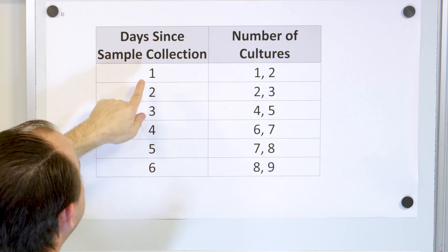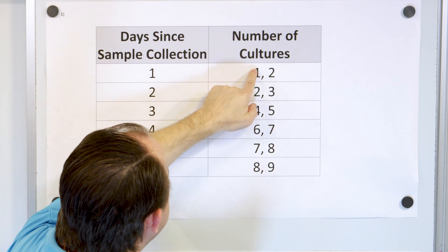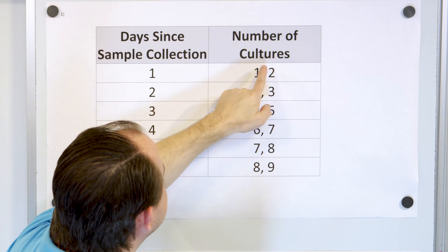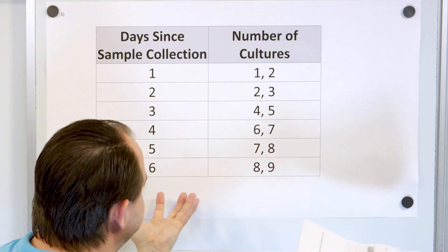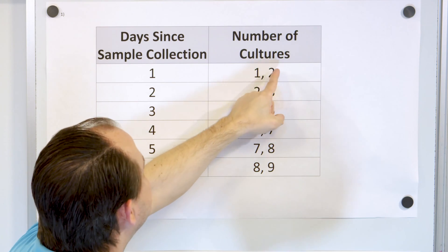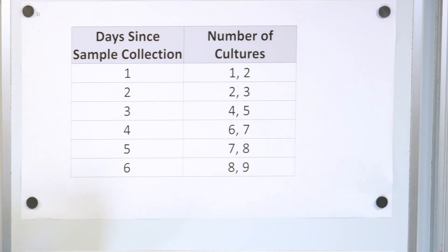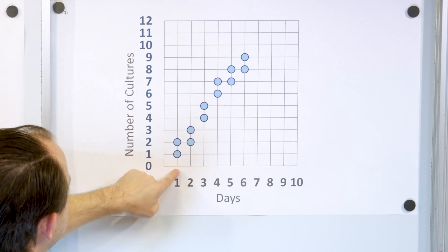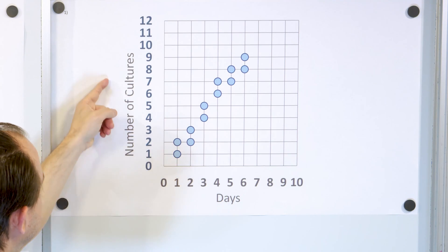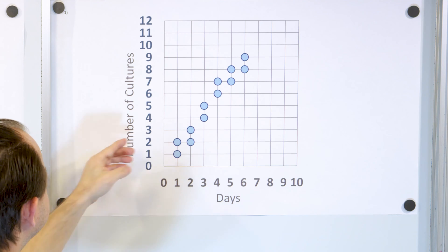After one day, we have one culture and then two cultures. These are two separate data points — two separate petri dishes of food. One of them has one culture and the other has two. So let's go ahead and plot that. After one day, we have one culture on this axis and then two cultures.